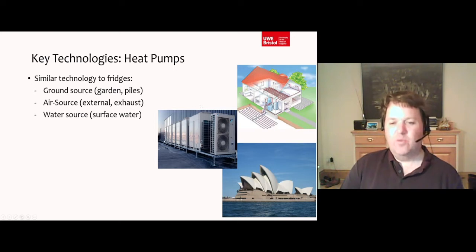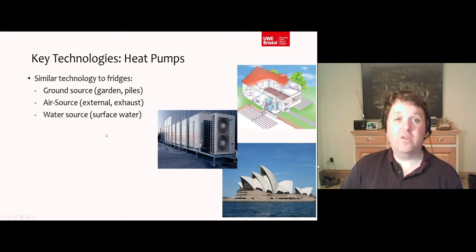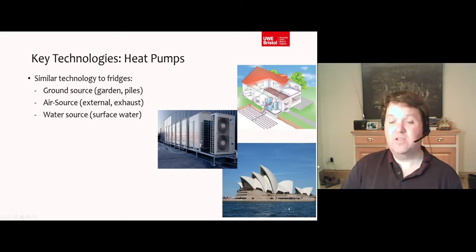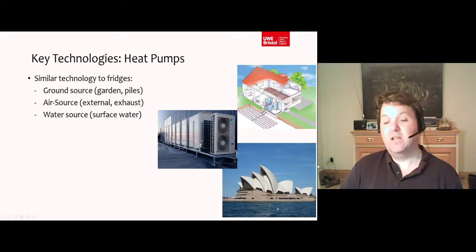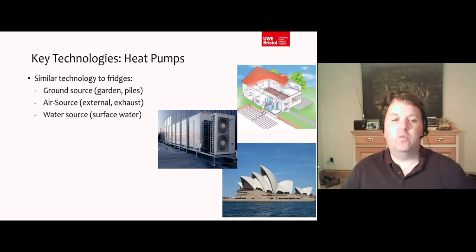Air source heat pumps have air flowing across them, and you're pumping heat from the air into your building — to whatever heat emitters are in your building, whether it's underfloor heating as shown here, radiators, or whatever it is. You can also get water source heat pumps. If you happen to be located near water, it's quite common to use one. Water is quite a good medium for a heat pump, and the Sydney Opera House, because it's adjacent to the water, actually has an extensive system of water source heat pumps.